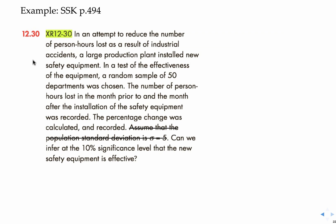Let's look at an example from the textbook. A large production plant installed new safety equipment in an attempt to reduce the number of person-hours lost to industrial accidents. A random sample of 50 departments was chosen. The number of person-hours lost in the month prior to and after installation was recorded and the percentage change was calculated. They're testing to see if the equipment is effective — that is, whether the number of hours lost went down.